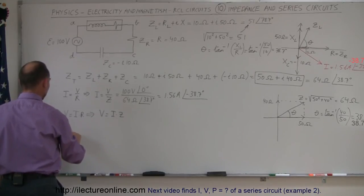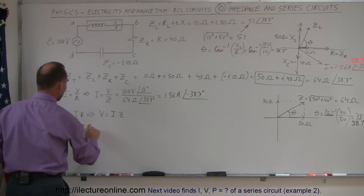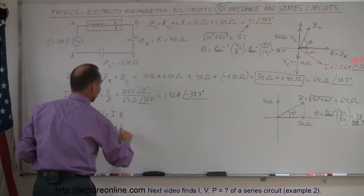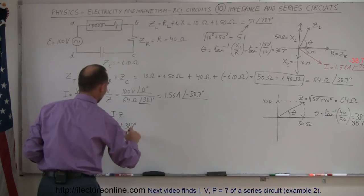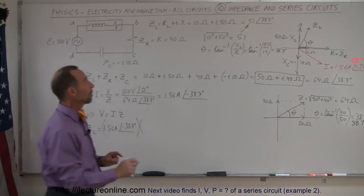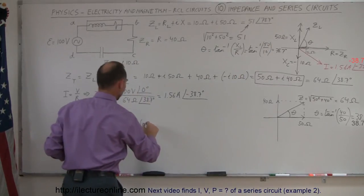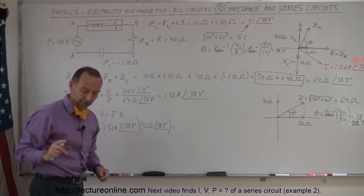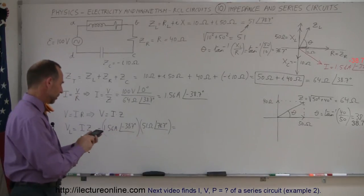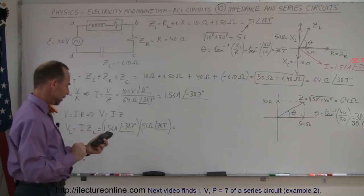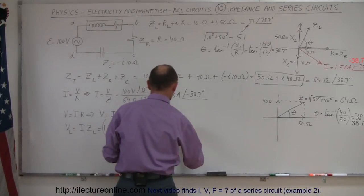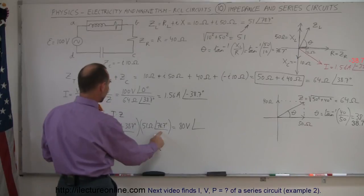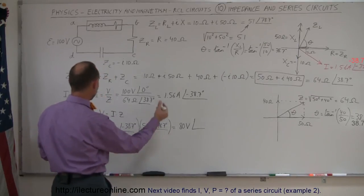The voltage across the inductor equals the current times the impedance of the inductor: 1.56 amps at negative 38.7 degrees multiplied by 51 ohms at 78.7 degrees. Multiplying the magnitudes: 1.56 times 51 gives approximately 80 volts. When multiplying in polar form, we add the angles: 78.7 plus (negative 38.7) equals exactly 40 degrees. So V_L equals 80 volts at a phase angle of 40 degrees.